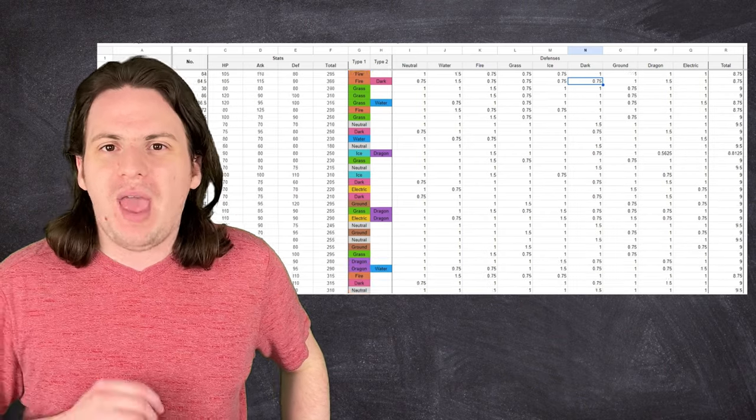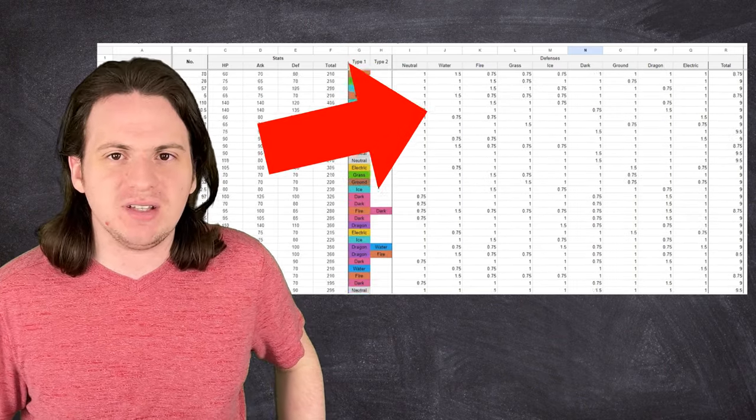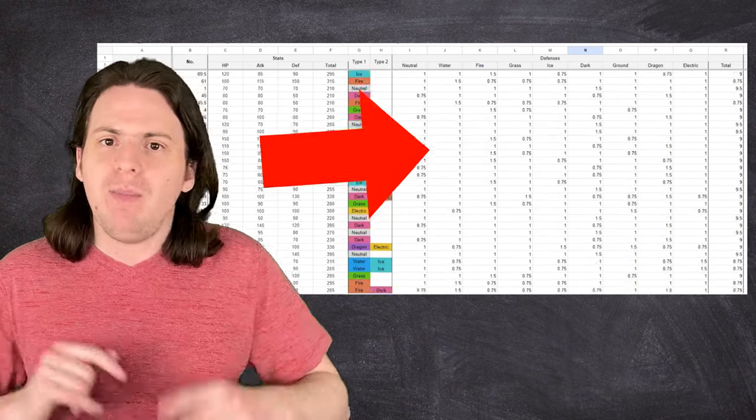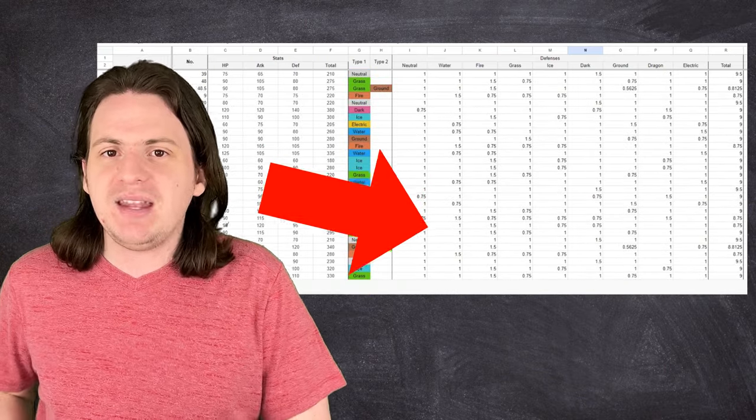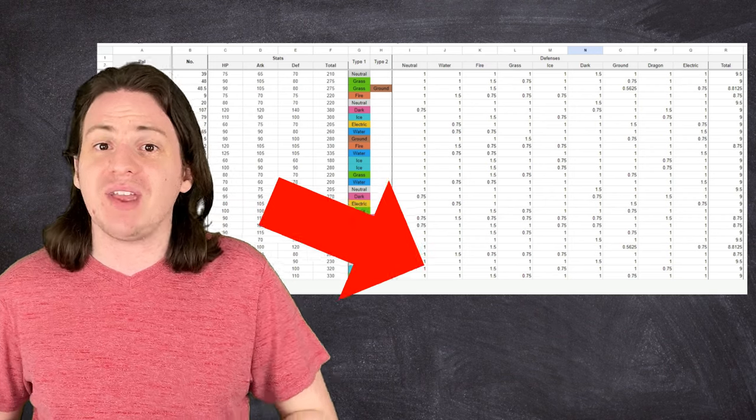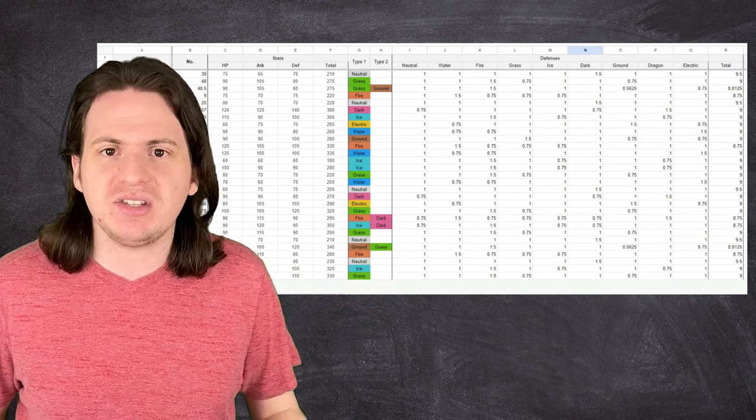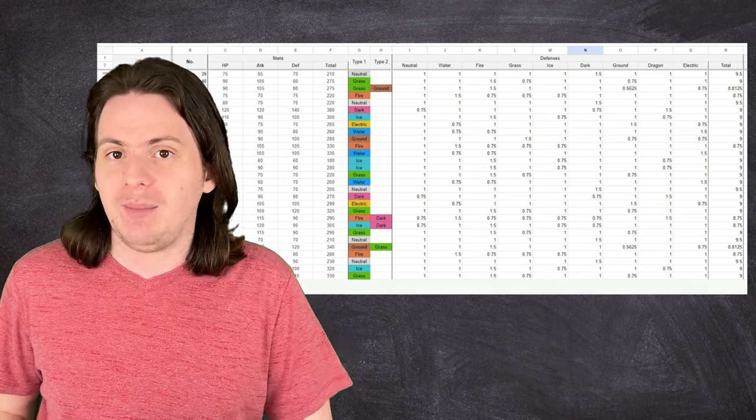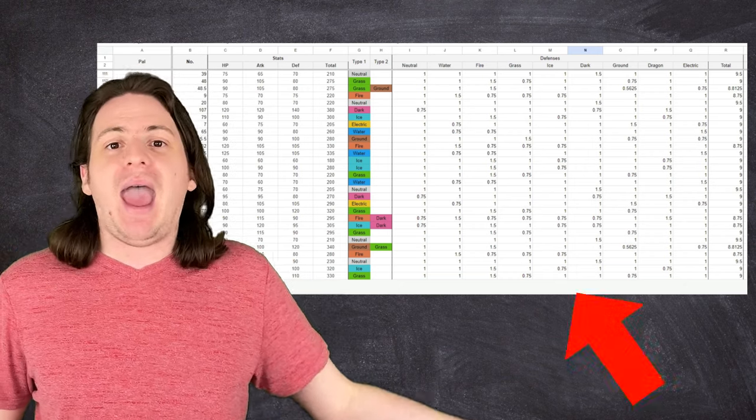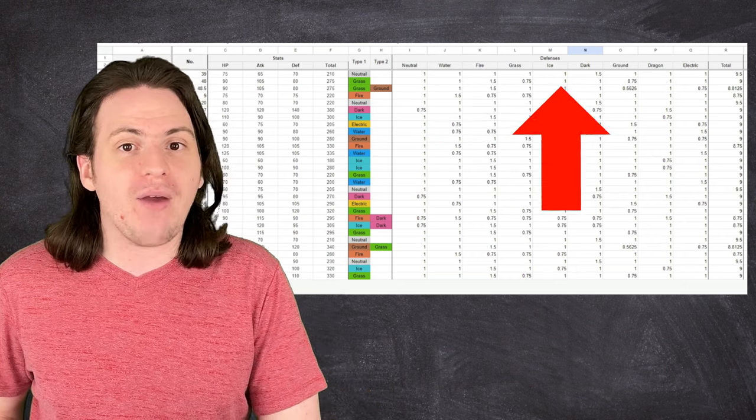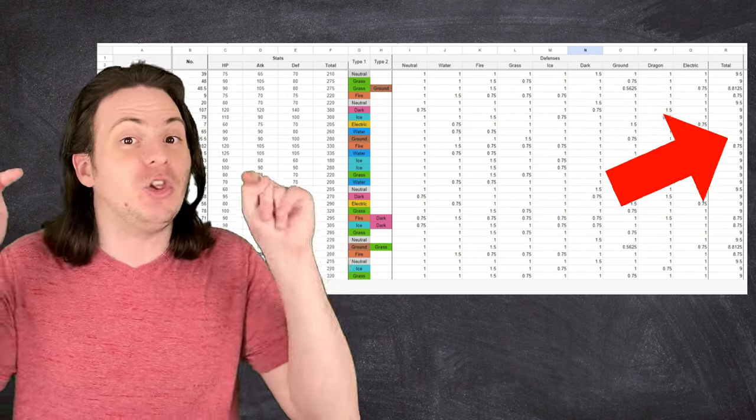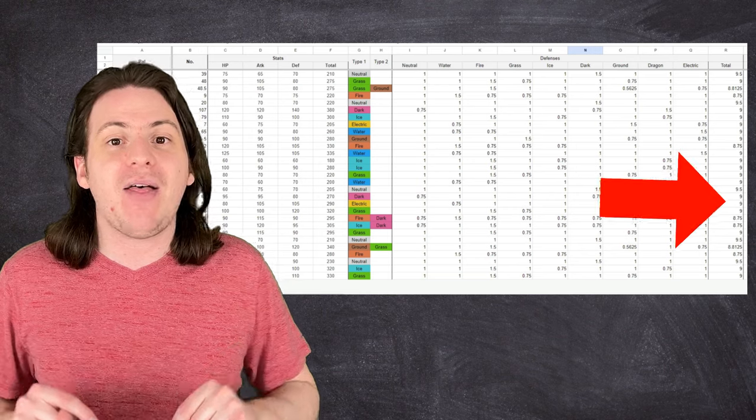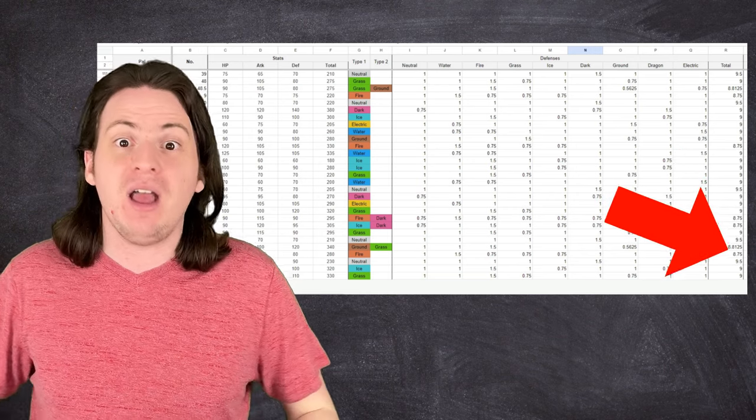So, long story short, I added another section to the spreadsheet with every PAL's type interactions. It's important to note here that, because of the way the game's type interactions work, having many weaknesses is worse than having less resistances, since resistances don't negate as much damage. Then, I simply added all these multipliers together for every PAL to get a final resistance score. With a lower number meaning that a PAL has more resistances than weaknesses.